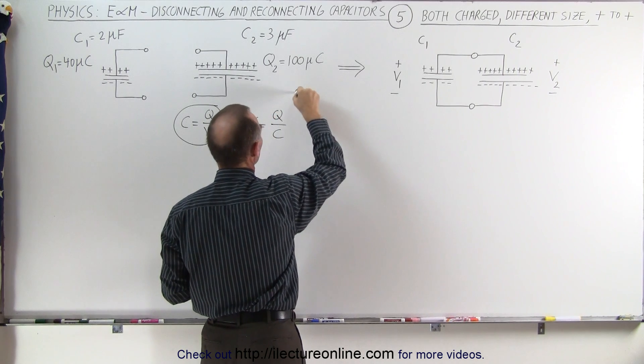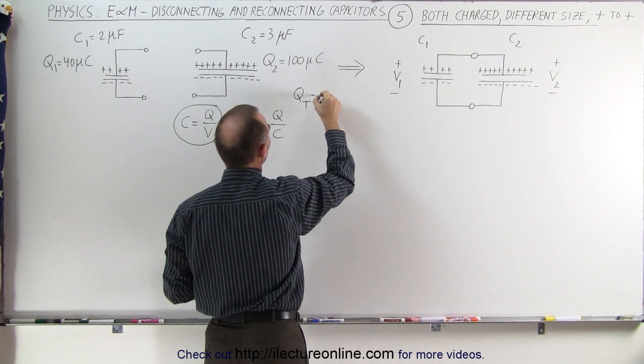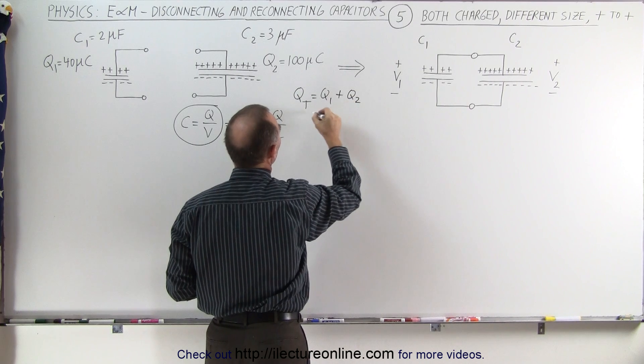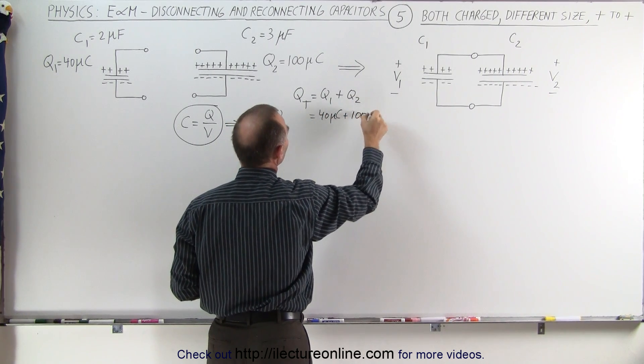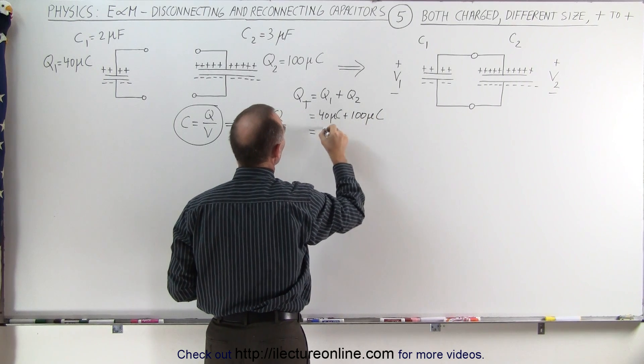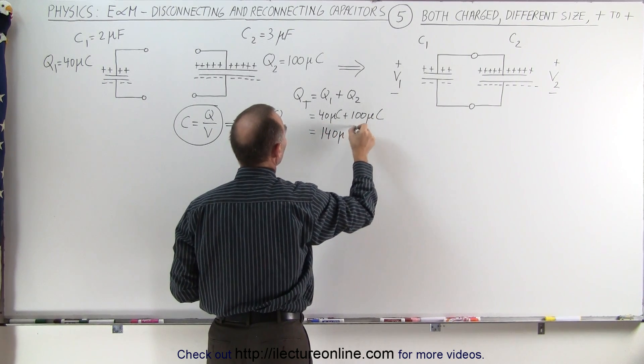In other words, the total charge q total at the end is going to be q1 plus q2, which is going to be 40 microcoulombs plus 100 microcoulombs, which is 140 microcoulombs.